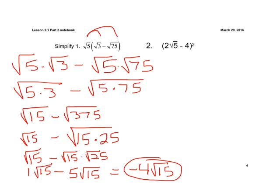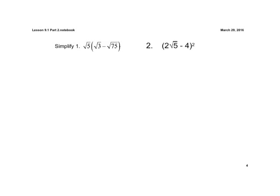Let's do our last example here. Now we have what we see — this is a binomial, there are two terms there, and it's a binomial squared. If we remember, if we rewrite that out, squared just means basically the same thing multiplied twice. So we have 2 square root of 5 times 2 square root of 5 minus 4 — we're just basically doing it twice.